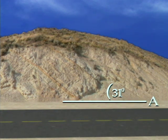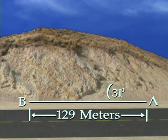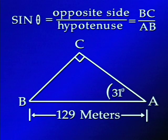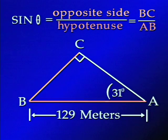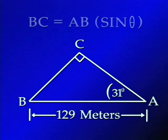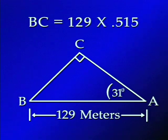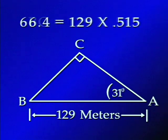Next, we measure the distance from one stratum to another. From these two bits of information, we can establish a right triangle, and through the use of trigonometry, determine the length between point B and C — the strata sequence's measured thickness. In a right triangle, the sine of angle theta equals the length of the side opposite to it, BC, divided by the length of the hypotenuse, AB — here, 129 meters. Since we want to find BC, we multiply both sides by AB, giving BC equals AB times sine theta. In our example, BC equals 129 times the sine of 31 degrees. Sine of 31 degrees is 0.515, so BC equals 66.4 meters.